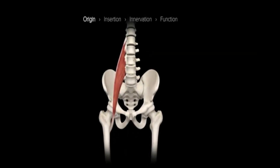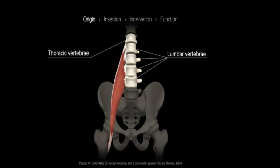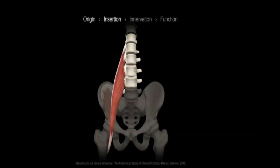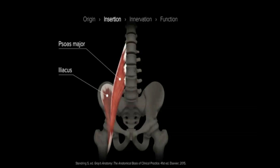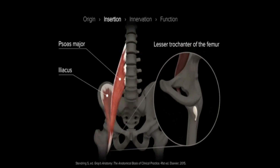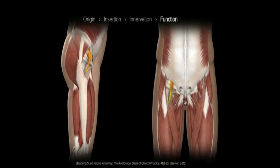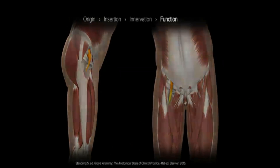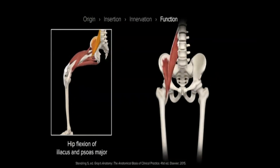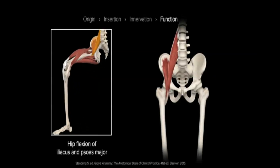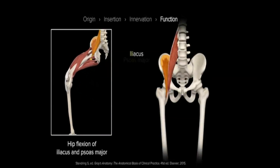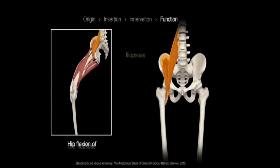The psoas major is a thick, long fusiform muscle that originates along the thoracic and lumbar vertebral bodies of T12 to L4 and the transverse processes of the fifth lumbar vertebrae. Moving distally, the psoas major fuses with the iliacus before terminating at its insertion on the lesser trochanter of the femur. It is innervated through the anterior rami of spinal nerves L1 to L3 and functions to forward and laterally flex the trunk, and is known as a primary flexor of the hip. Given their shared responsibility for hip flexion and common insertion, the iliacus and psoas major are often referred to simply as the iliopsoas.